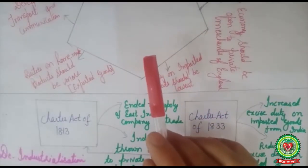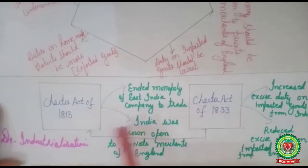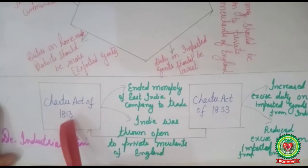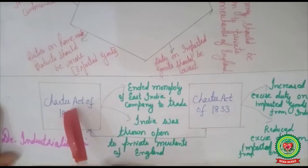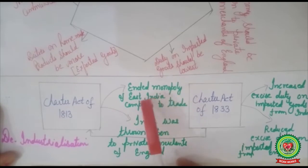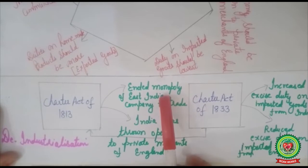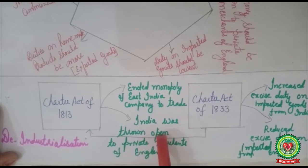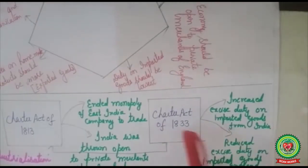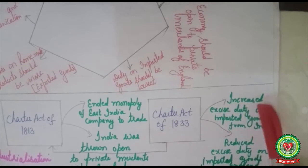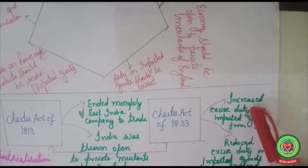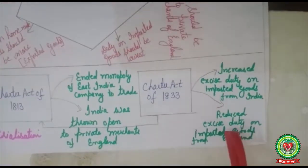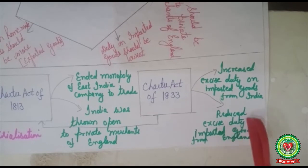To accept these demands, two laws were made in the British Parliament: the Charter Act of 1813 and the Charter Act of 1833. The Charter Act of 1813 declared that the East India Company's exclusive monopoly to trade in India was ended, and India was thrown open to private merchants of England — any British merchant or investor had the right to come and trade in India. The Charter Act of 1833 increased excise duty on goods imported from India to England and reduced duty on British goods going to India.